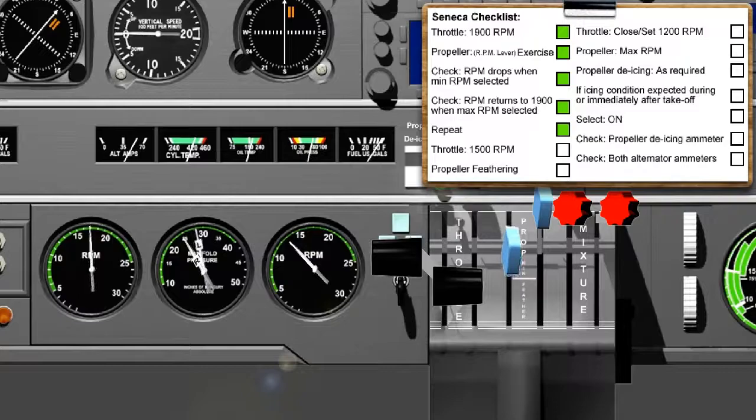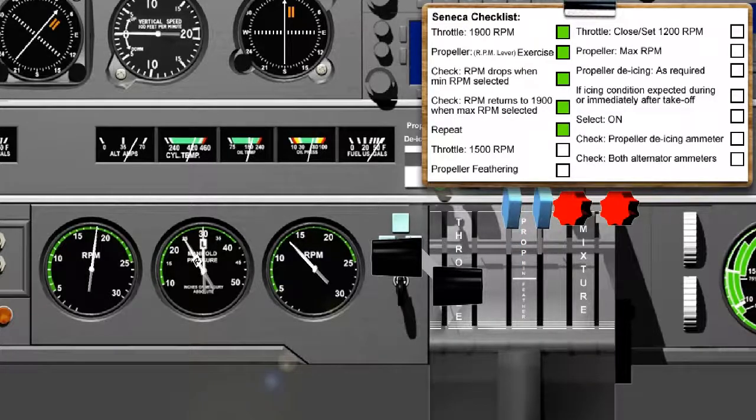Repeat. Repeat the previous two checks again. By doing this, you'll ensure that warmer oil is being introduced into the propeller control mechanism and the associated pipe work. The warmer oil will sharpen up the propeller's response to your movement of the propeller control lever.